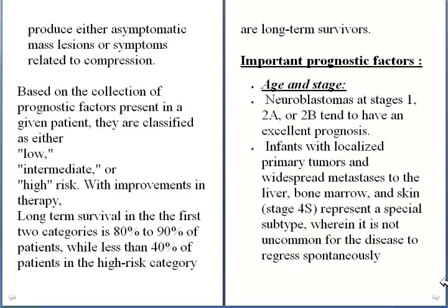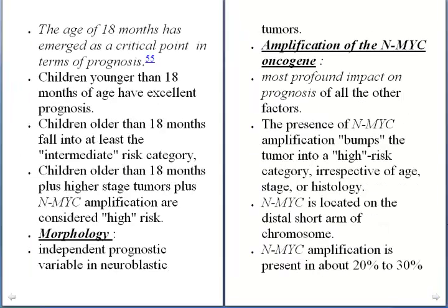Age and stage are very important prognostic factors. If neuroblastomas are present at stages 1, 2a, or 2b, they tend to have an excellent prognosis. If the neuroblastoma is in stage 4s, the chances that the disease will regress spontaneously are possible. The age of 18 months has emerged as a critical point in terms of prognosis — children younger than 18 months with neuroblastoma have excellent prognosis.